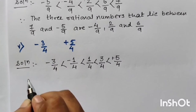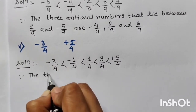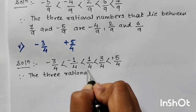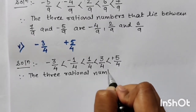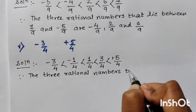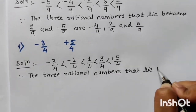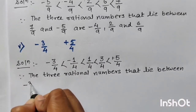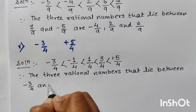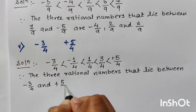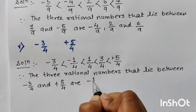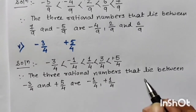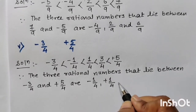I will write minus 1, plus 1, and plus 3. Put the comparison sign and write the answer. Therefore, the three rational numbers that lie between minus 3 upon 4 and plus 5 upon 4 are minus 1 upon 4, plus 1 upon 4, and plus 3 upon 4. You can also write minus 2 upon 4, 0 upon 4, or 2 upon 4 — it is totally up to you.